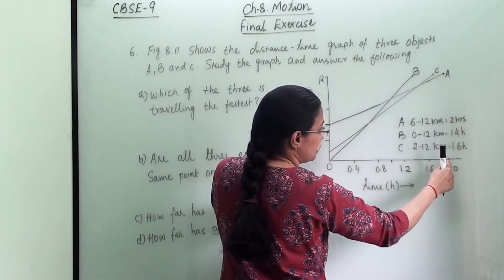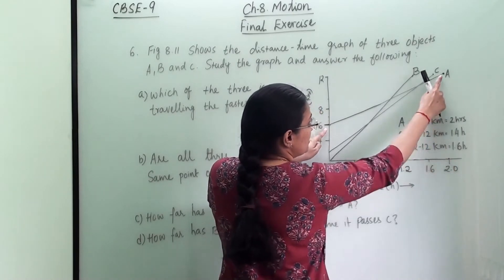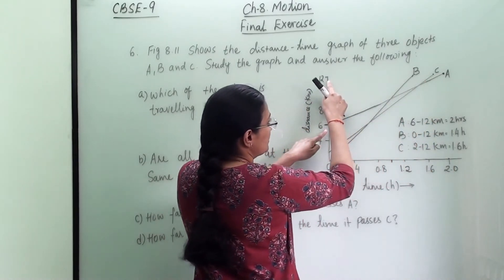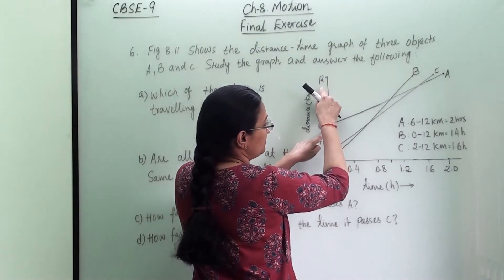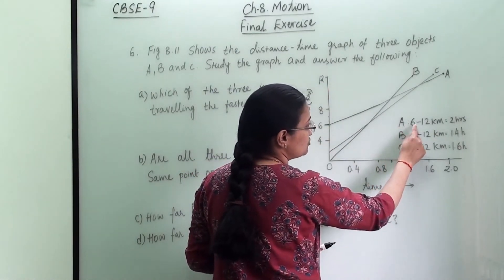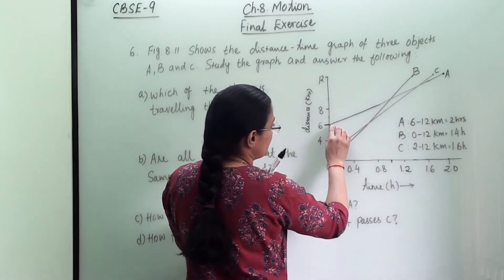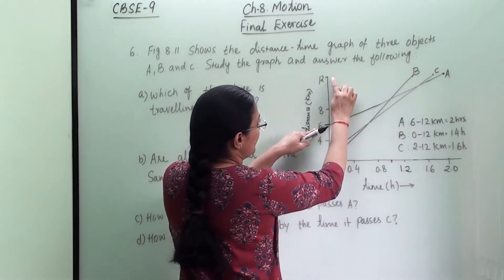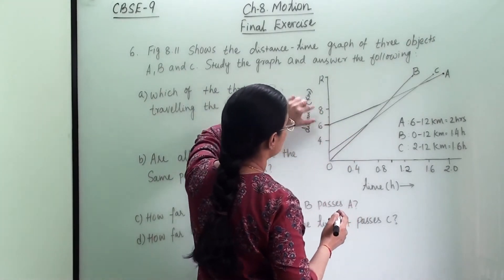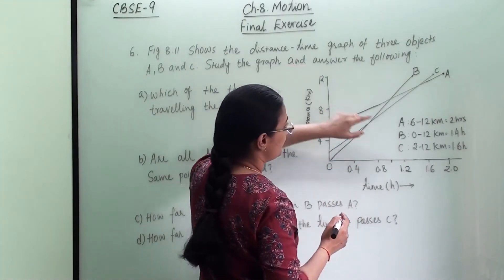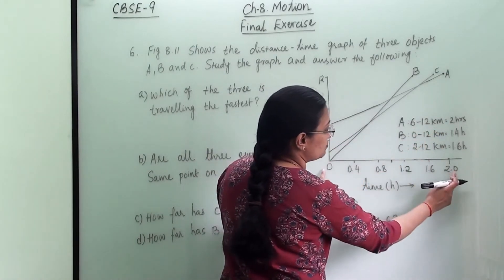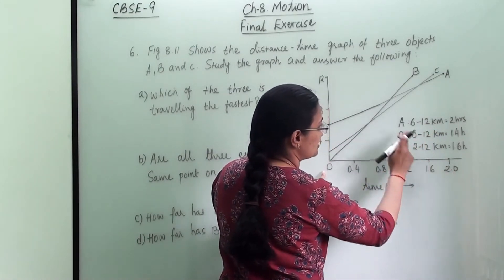If we extend the line towards the y-axis it gives us 12 km. So object A's journey is from 6 km to 12 km, and it takes 2 hours. That is the analysis for object A.